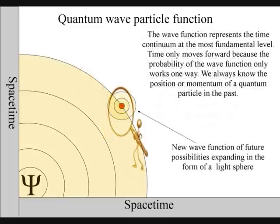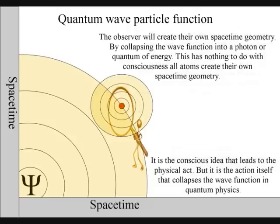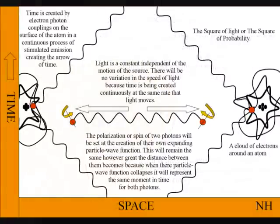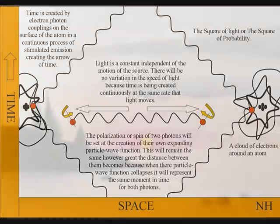Life will create its own ripples in the fabric of space-time, forming its own broken symmetry of its own evolutionary path or timeline. It is because this process is at the same rate that light moves that the speed of light between the atoms will always be a universal constant, independent of the motion of the source.